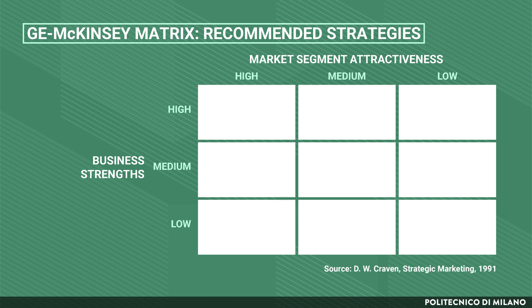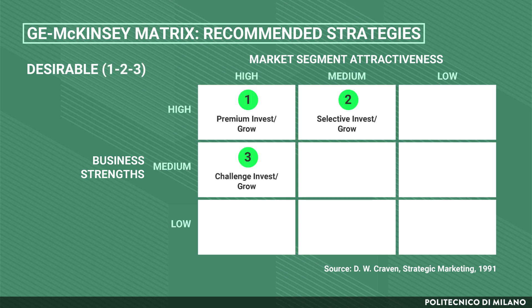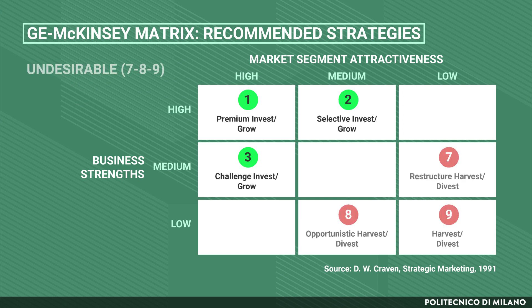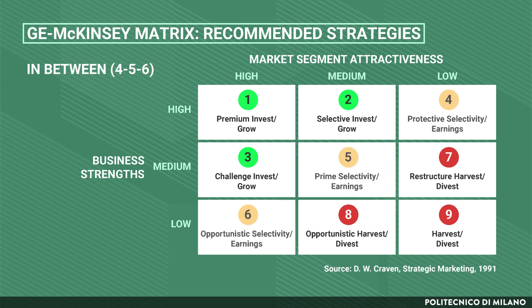SBUs whose positioning is deemed desirable are placed in cells 1, 2, and 3 at the top left corner of the matrix. Here, the tool suggests an invest-grow strategy. SBUs with an undesirable positioning from 7 to 9 should be treated with a harvest-divest strategy, while SBUs with an in-between positioning from 4 to 6 should be managed with a selective strategy, mostly aimed at generating earnings.